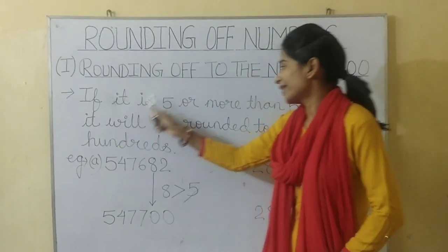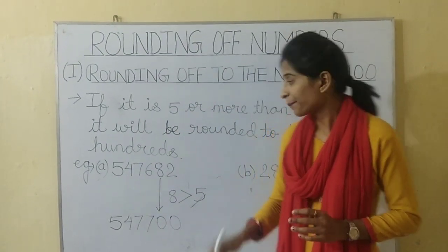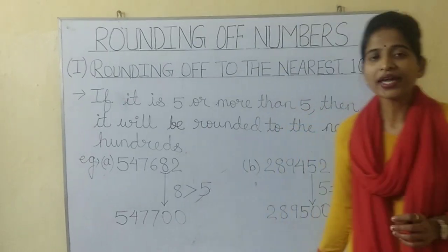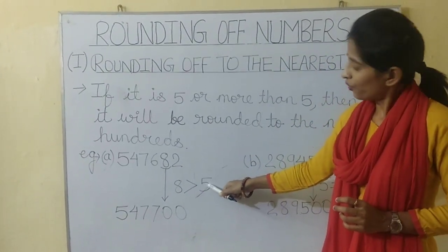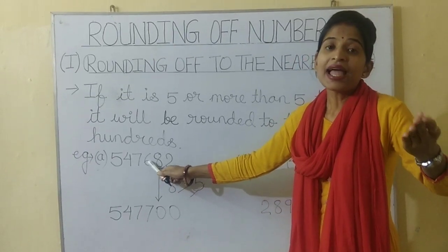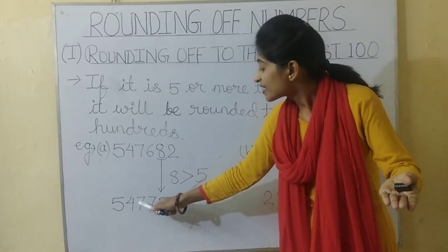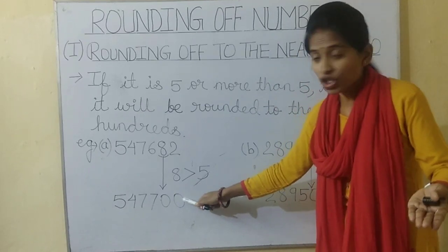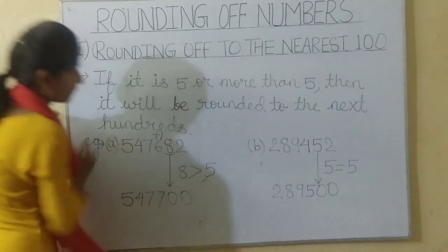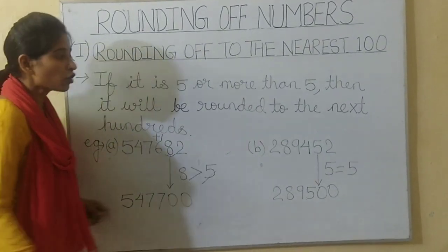But if it is 5 or more than 5, then it will be rounded to the next hundred. Look at this example. Here the ten's digit is 8, and 8 is bigger than 5, so it will be rounded to the next hundred. There it is 600 and it will be rounded to 700. The hundred's digit increases by 1. So the final answer will be 547700.